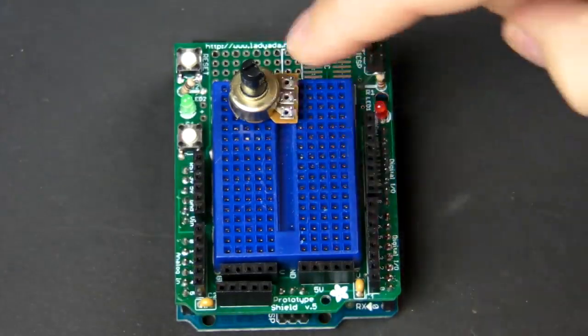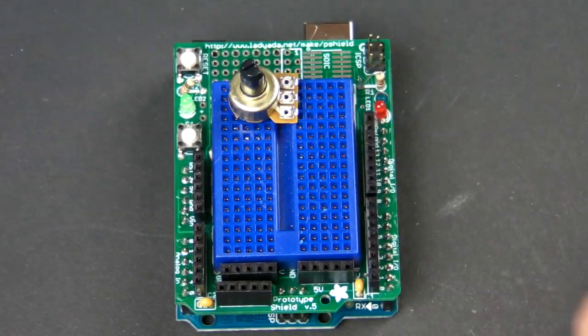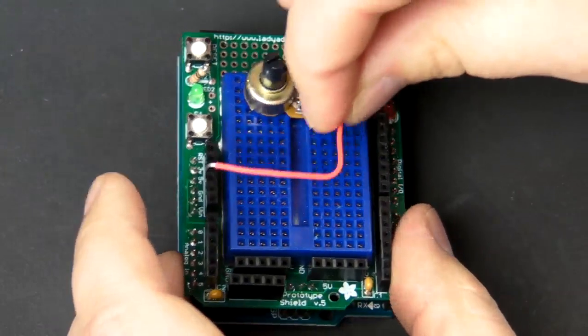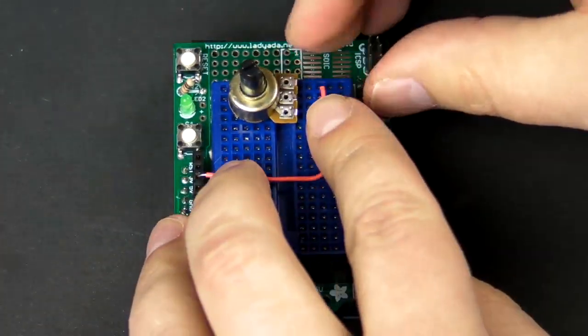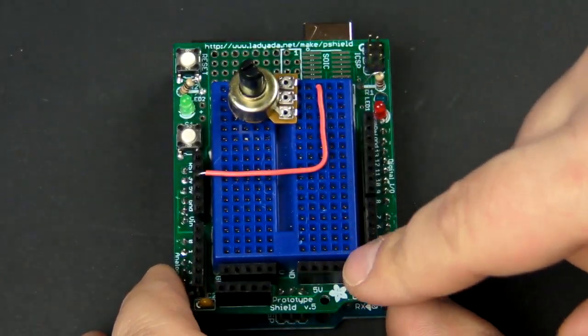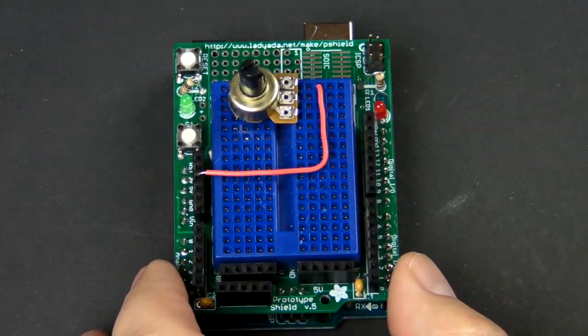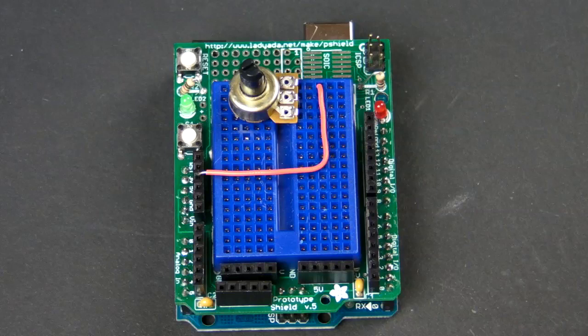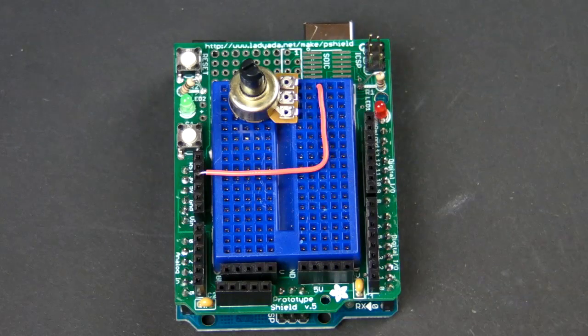And connect the top pin here to the five volt, and five volt can be found right here on the Arduino. And if you have the Proto Shield, there's also a five volt rail down on the bottom. I just like to connect it there. The next one we're going to connect is the middle pin. That's connected to the sweeper on the potentiometer, and that's what we're going to read.